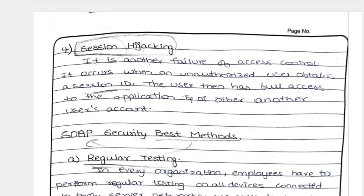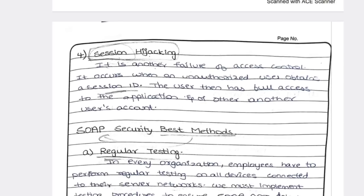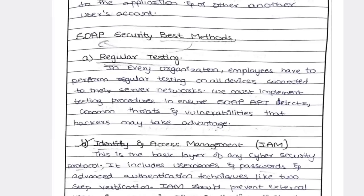Next is session hijacking — someone hacks your online class session and takes over the host. So, what are the SOAP security best methods? The first one is regular testing — in any organization, you need to regularly update your system.